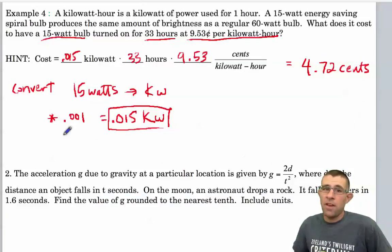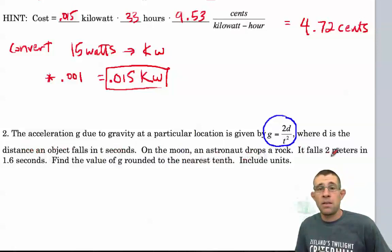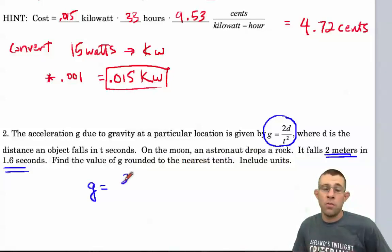All right. Now, finally, in our last example, we have a formula. A formula, remember, is one variable set equal to an expression. So we see that gravity is equal to 2 times the distance divided by time squared. So we have a few values we need to substitute in for our variables to solve for our formula.